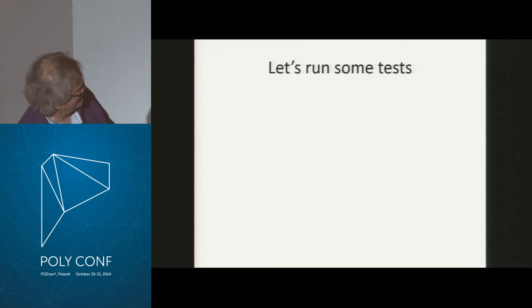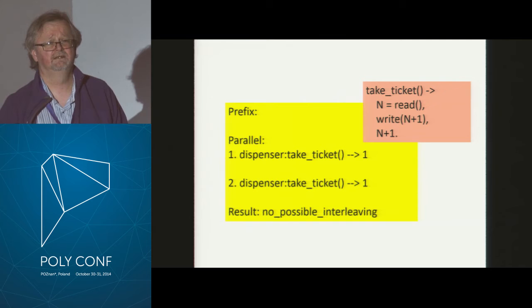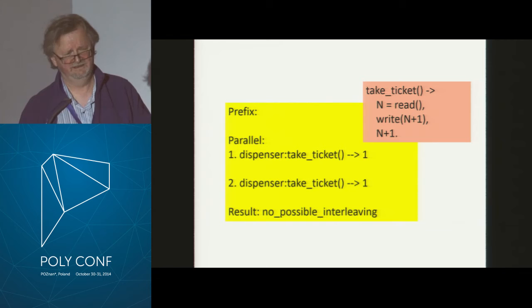Now I'm going to show you the code I was running — that's my code for taking a ticket. Read and write a global variable. Wait a minute — that's a critical section. Where's the synchronization code? There isn't any. No wonder it doesn't work. My point here is not that we found a very subtle race condition. My point is: here is a completely obvious race condition, and we find it quickly and reliably.